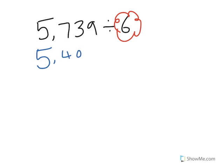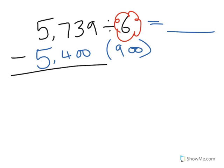If I put this down here, you should know that that is 900 lots of 6. I remember I put that into the brackets, and we add the bracketed numbers to make our final answer, which will go here. I take that 5,400 away from the original number, and that leaves me with 339.